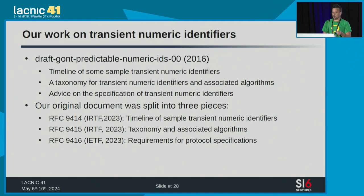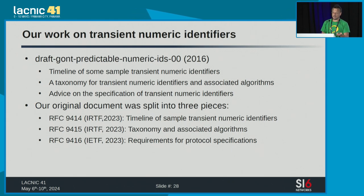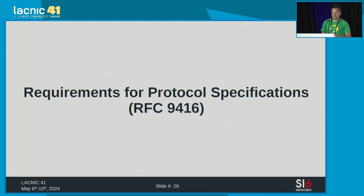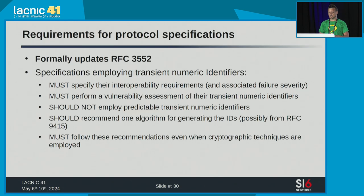So far, this was just research — nothing would force specification authors to do anything different. RFC 9416 was the most difficult one to get published, not because of complexity. What does RFC 9416 do? It updates RFC 3552 — the document that gives recommendations on how to write security considerations for Internet protocols, analyzing security. It was published about 20 years ago and had received only one update. We did the second update.